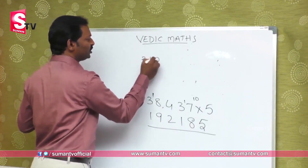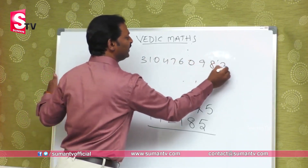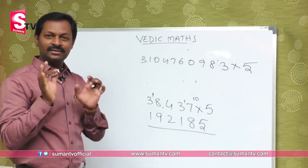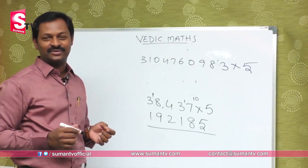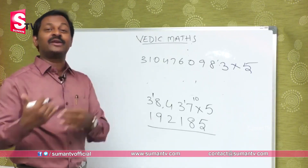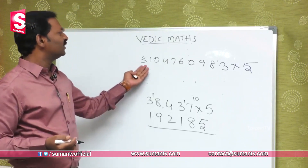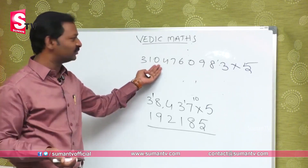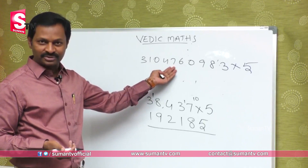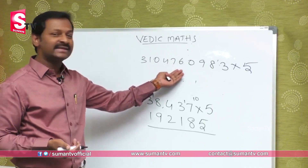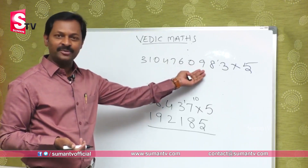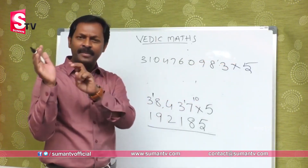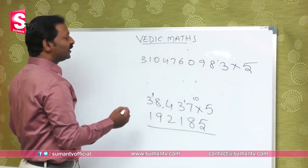Suppose you have 3, 1, 0, 4, 7, 6, 0, 9, 8, 3 multiplied by 5. You have to multiply by 10 first and then divide by 2. Half of 3 is 1 remainder 1. 31 — half is 15 remainder 1. It is 10 times, it is 5 and 2. It is 3 times 2 giving 6. 2 eights are 16. Direct 2 zeros are 0. 2 fours are 8. 2 nines are 18.